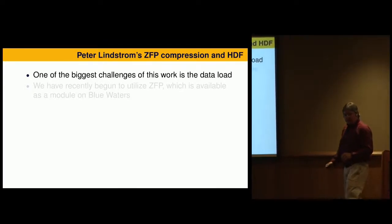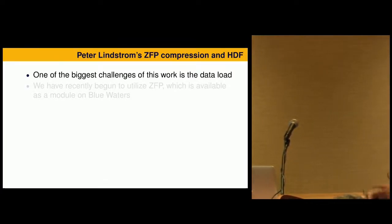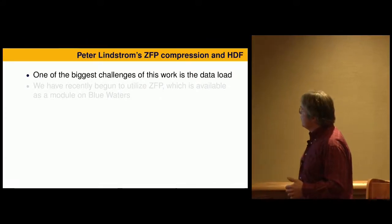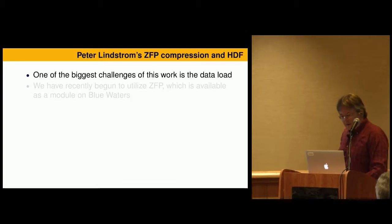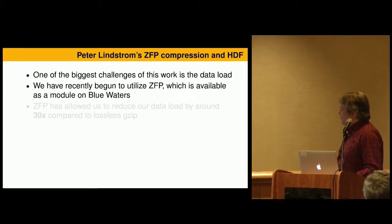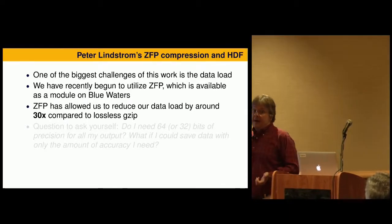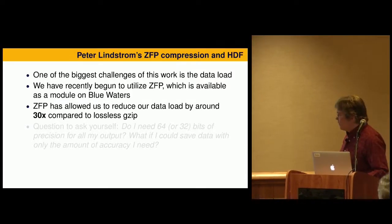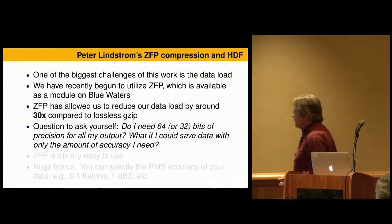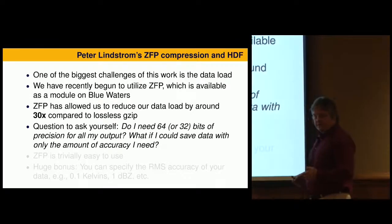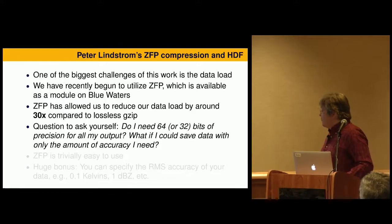I'm going to shift gears tremendously and talk about compression. As you can see, I save a lot of data, and I know a lot of users on Blue Waters do too. I was reading the HDF mailing list a few months ago and saw there's a new floating point compression algorithm available. Peter Lindstrom at Lawrence Livermore has developed a lossy compression technique. We've begun to use it — in fact, all the stuff I showed you so far was compressed with this technique. It's allowed us to reduce our data load by around 30 times — a factor of 30 — compared to lossless gzip, which is what we were using before with HDF. The question is: if you're doing double precision, do you really need all 64 bits of precision for your output? Or what if you could save data by specifying the amount of accuracy you really need? That's what ZFP lets you do.